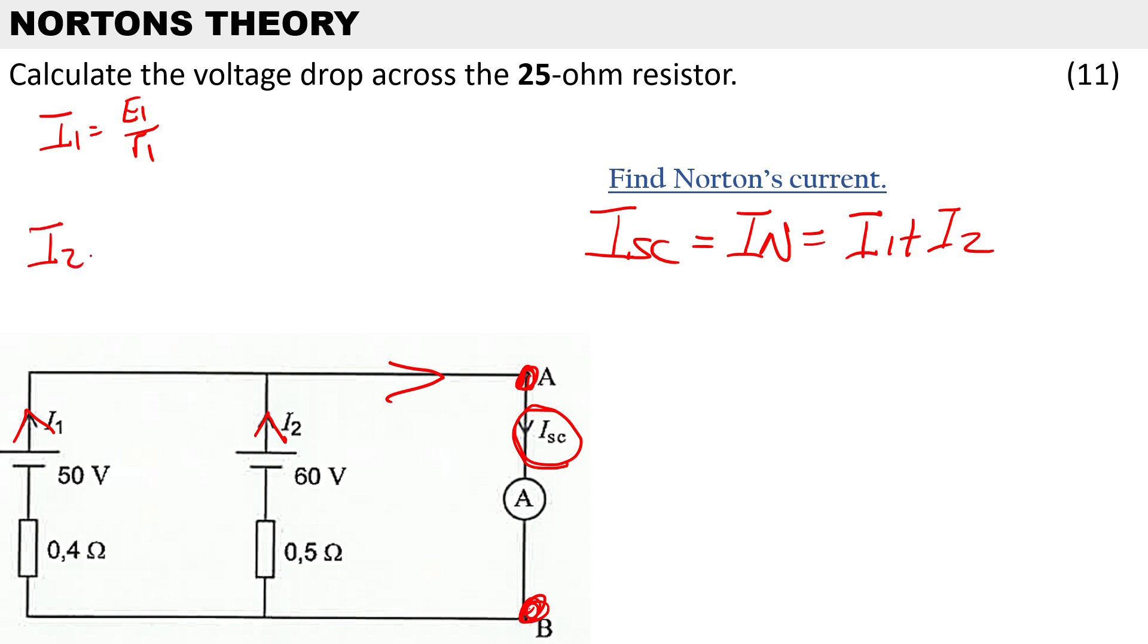To calculate I2 it'll be EMF2 over internal resistance 2. The first EMF is 50 volts, the internal resistance is 0.4. The second EMF is 60 volts divided by 0.5, and that will give us our current.